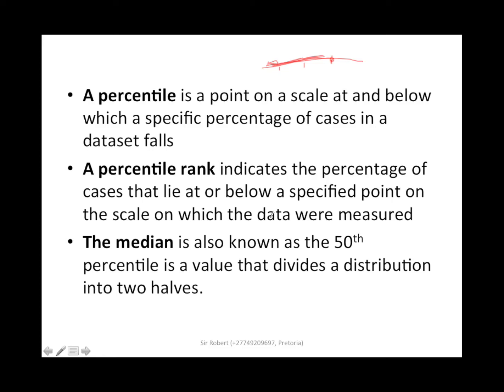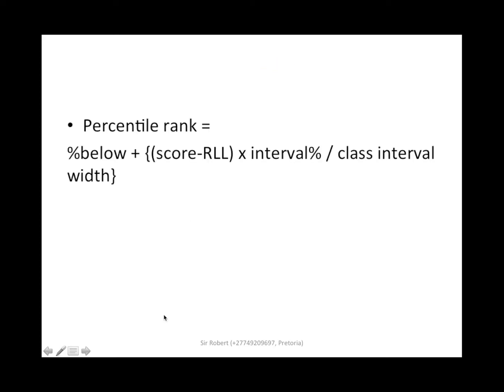Let's move on to the next slide. Percentile rank is calculated the following way: percentage below plus score minus the lower limit times interval percentage divided by class interval width. So this is the formula.